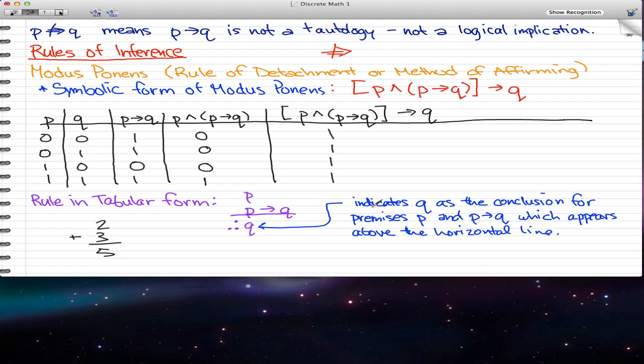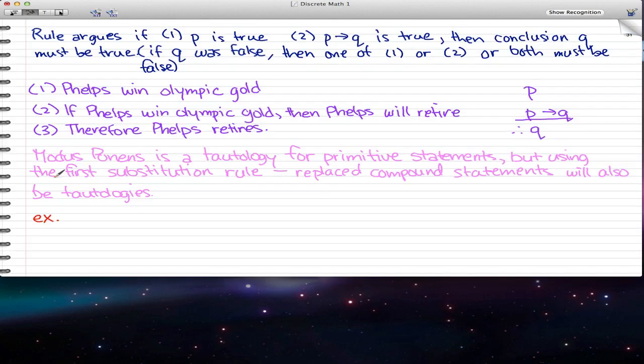You can see that we have P, then P implies Q above the horizontal line, and then we have these three dots (I don't remember what they're called) and then Q. This Q is the conclusion for premises P and P implies Q, which appear above the horizontal line. Let's work out what it really means.